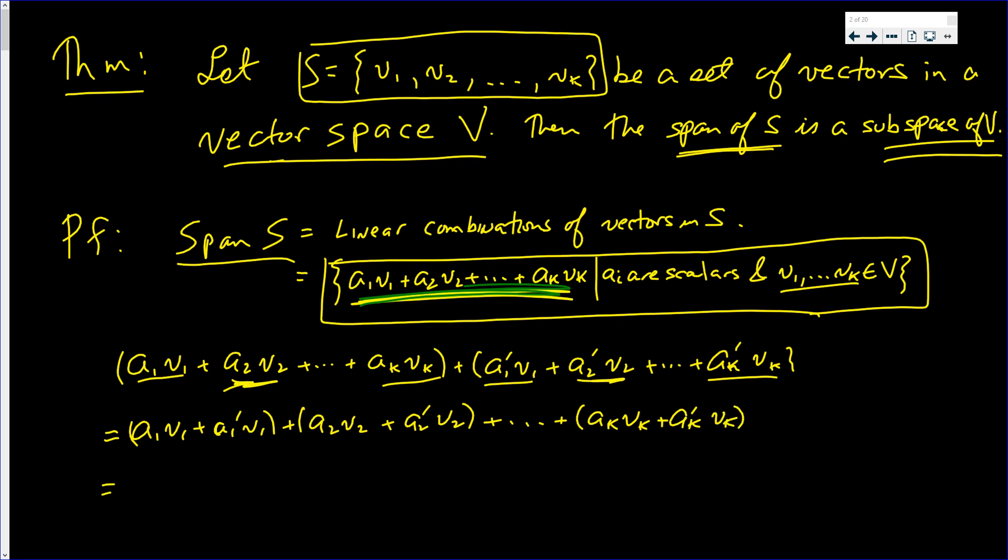This continues all the way down to ak·vk plus ak'·vk, which equals (ak + ak')·vk. That should be circle plus.